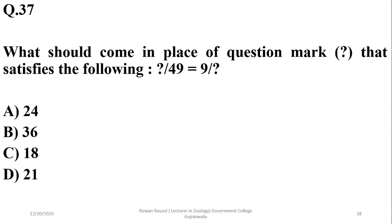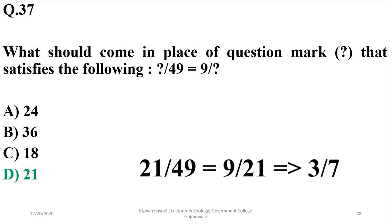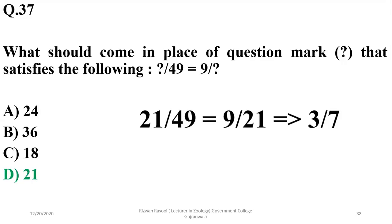Question 37: What should come in place of the question mark? I have no formal explanation for it, but this is a possible option — it's 3 by 7, so 21 is the right option according to mathematicians.